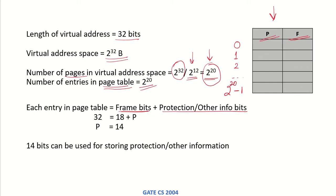We calculated that the number of bits required for the frame number is 18. It is also given that each page table entry is 32 bits. So the number of bits available for protection and other information is 32 minus 18, which equals 14. Therefore, 14 bits can be used for storing protection or other information.